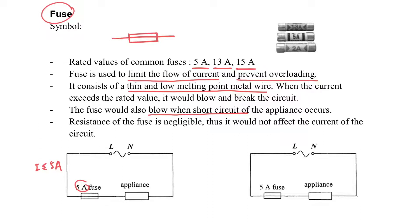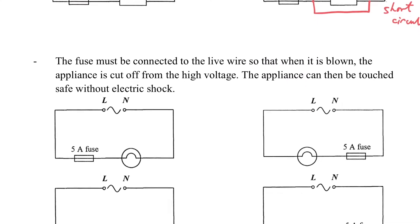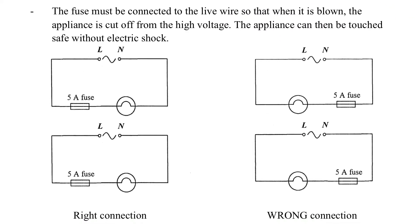So if it is a 5A fuse, the current should be lower or equal to 5A. However, if there is a short circuit, because the resistance is too low in the whole circuit, then the current will go up very quickly and it will blow the fuse. That means it will become broken.